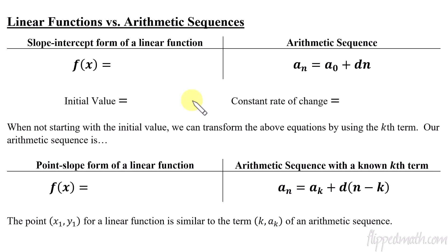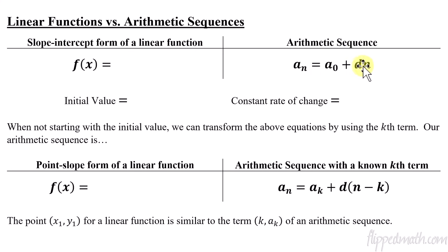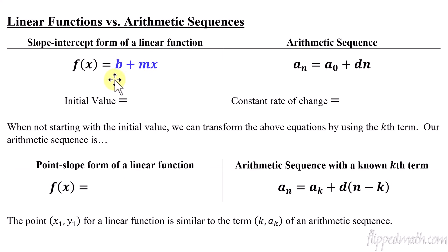To start us off, we're first going to look at arithmetic sequences. You remember those — we had a sequence where we had a_naught, the initial first term, and then we'd add the difference times whatever term number we had. A linear function can be represented by something very similar, which is slope-intercept form. If you remember back to your algebra one days, we'd think of this as mx plus b — that's our slope-intercept form.